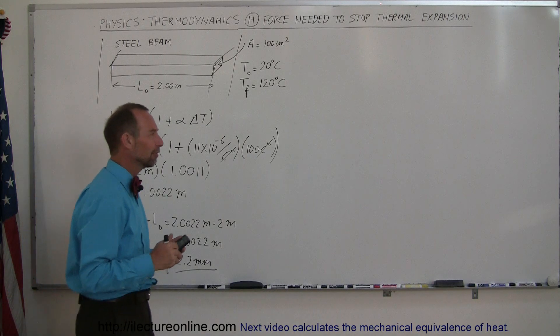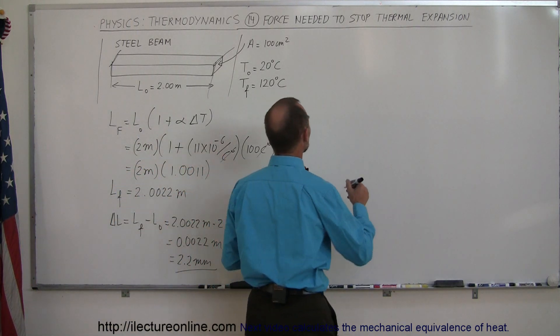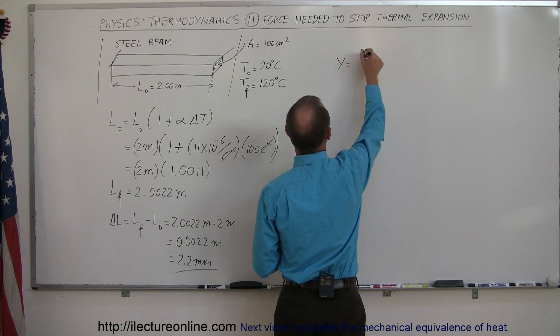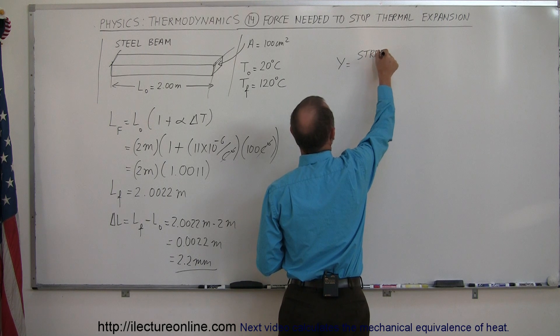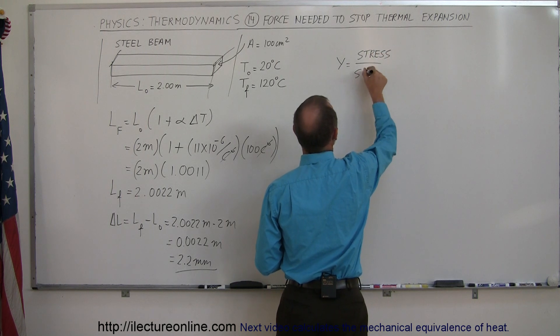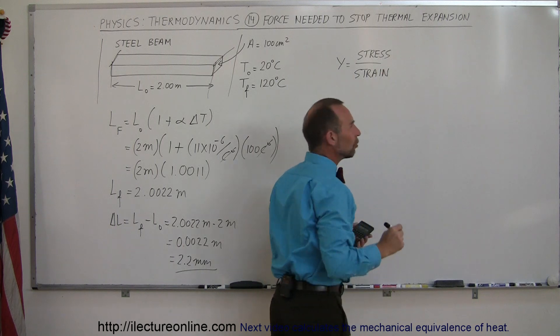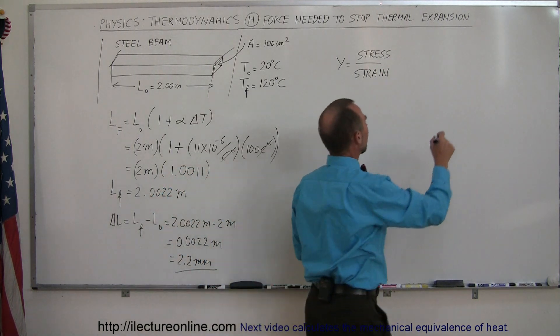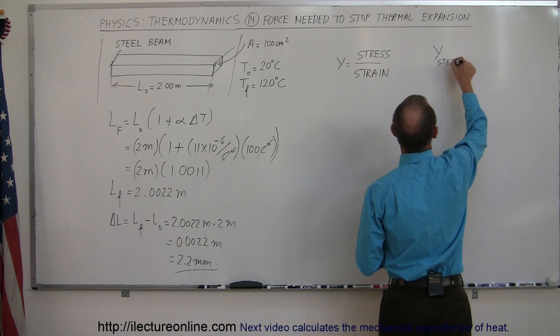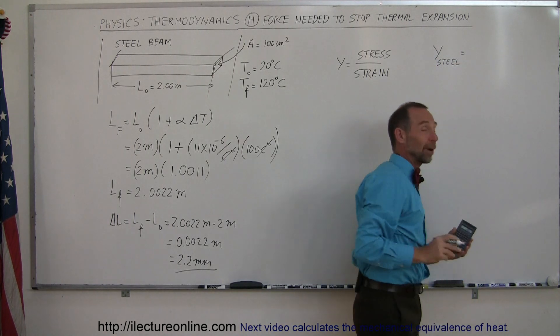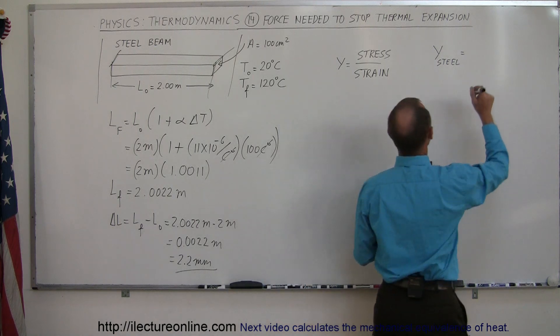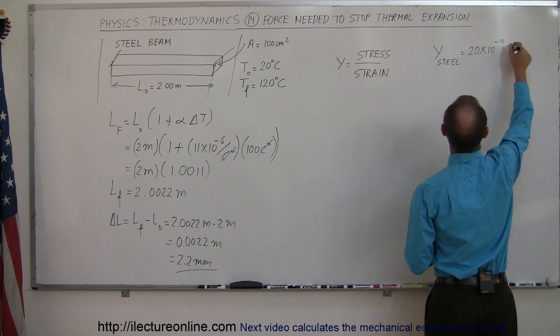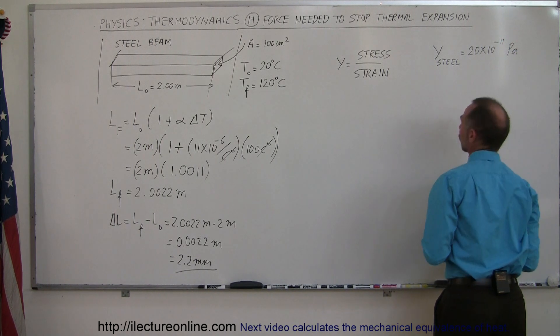Now we have to go back to a different discipline in physics. We have to go back to Young's modulus, and we realize that Young's modulus by definition is equal to the stress divided by the strain. We also need to know what Young's modulus is for steel. Young's modulus of steel is equal to 20 times 10 to the 10th pascals, that would be newtons per square meter.